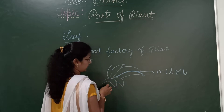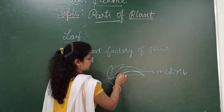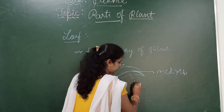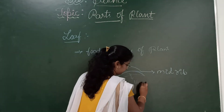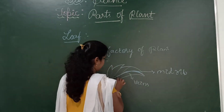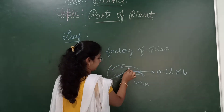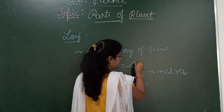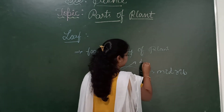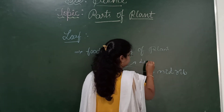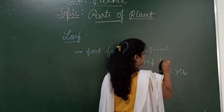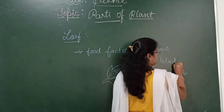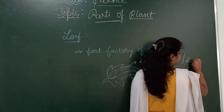The channel-like structures present in the leaf are called veins. The flattened part of the leaf is called the leaf blade, also known as lamina.